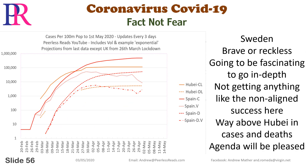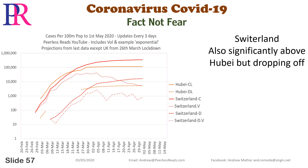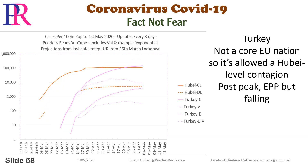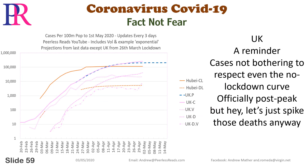Sweden: brave or reckless — going to be fascinating to go in depth. Not getting anything like the non-aligned success here — way above Hubei in cases and deaths. Agenda will be pleased. Switzerland: also significantly above Hubei but dropping off. Turkey: not a core EU nation, so it's allowed a Hubei-level contagion. Post-peak, EPP but falling. UK: a reminder — cases not bothering to respect even the no-lockdown curve. Officially post-peak, but let's just spike those deaths anyway.